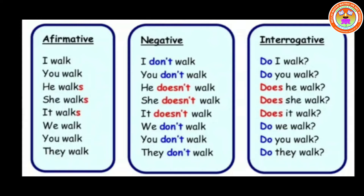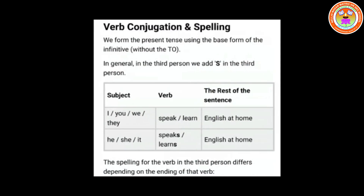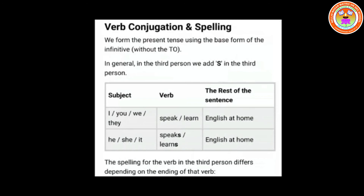Now we will go into detail about verb conjugation and spelling. We form the present tense using the base form of the infinitive verb. Infinitive means without any conjugation — 'to write' — we take out 'to' and use just the base form.